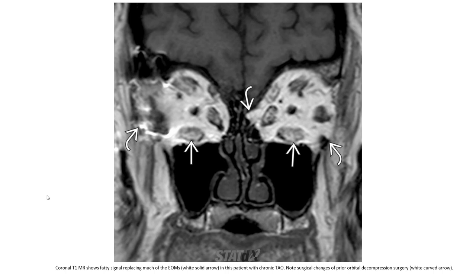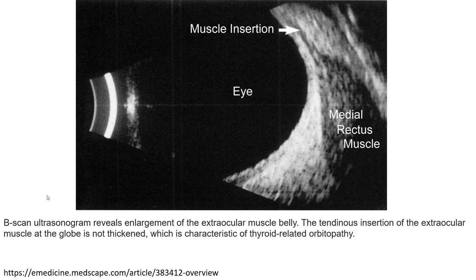This MRI image shows fatty signal replacing the mass of extraocular muscle in a patient with chronic thyroid-associated ocular disease. Note the changes of prior orbital decompression surgery. B-scan ultrasound reveals enlargement of the extraocular muscle belly, while the tendon insertion of the extraocular muscle is not thickened.